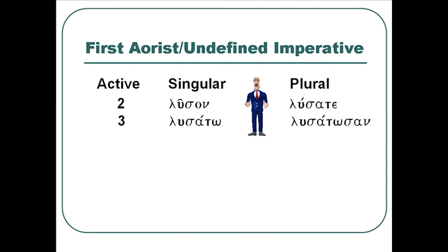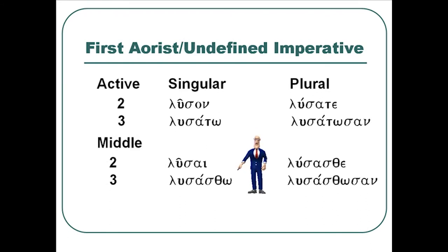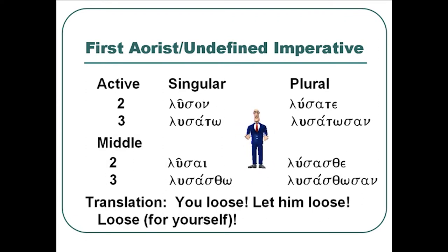The first aorist forms or undefined imperative is second person singular, luson, lusato, lusate, lusatōsan. And the middle form is lusai, lusasthe, lusasthe, lusasthōsan. And you can remember the endings, n-toto-tōsan and i-toto-sōsan. And these are translated you loose or let him loose or loose for yourself or let him loose for himself. Or in the middle just translated flat out active, emphasizing the participation of the subject in the action of the verb. So these are pretty easy. If you just remember the e-toto-tōsan chant, you'll have these forms down.